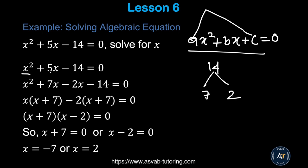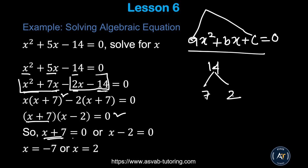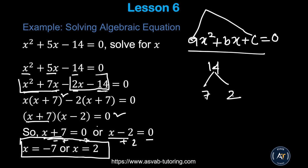Rewrite x² + 5x − 14 by splitting the middle term into +7x − 2x − 14. Factor the first two terms with x common to get x(x + 7), and factor the last two with −2 to get −2(x + 7). This gives (x + 7)(x − 2) = 0. Since the product is zero, each factor equals zero: x + 7 = 0 → x = −7, or x − 2 = 0 → x = 2.